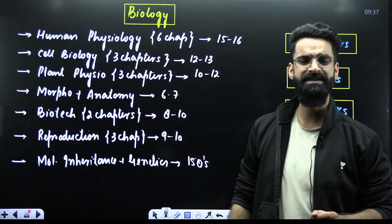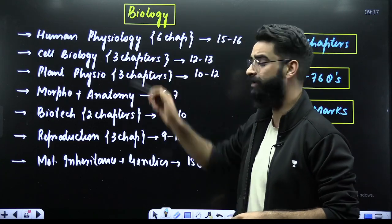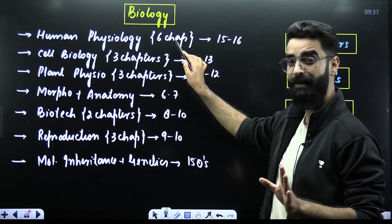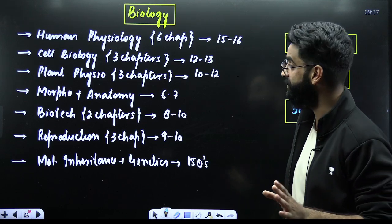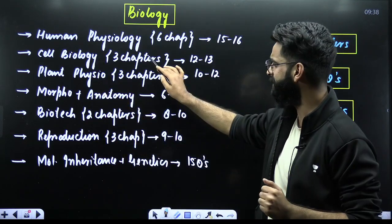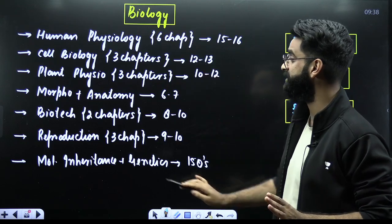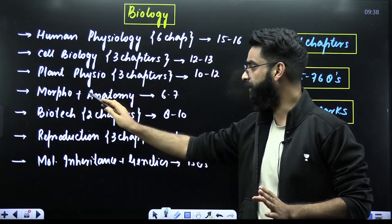Now, talking about the subject Biology. In your Biology, starting with Human Physiology, which consists of 6 chapters and 15 to 16 questions are asked from Human Physiology. Then comes your Cell Biology, which exactly consists of 3 chapters, 12 to 13 questions are asked. Plant Physiology, 3 chapters, 10 to 12 questions.